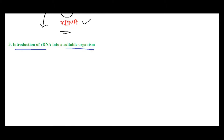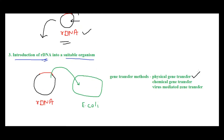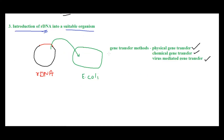To introduce rDNA into an organism — for example, into E. coli — the rDNA needs to be transformed into the host cell using specific gene transfer methods. These include physical gene transfer methods such as electroporation, liposome-mediated gene transfer, and microinjection; chemical gene transfer methods like the PEG method and calcium chloride method; or virus-mediated gene transfer, where a virus is used to transfer your rDNA.